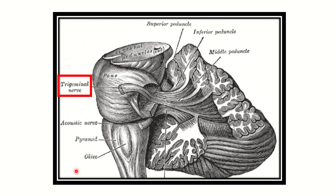Looking at the picture, we can see the pons and the cerebellum, and this area is the cerebellopontine junction. Here we can see a nerve arising — this is the trigeminal nerve, cranial nerve number 5. Below it, we can also see the acoustic nerve arising from this area, and this is the medulla oblongata with the pyramid and olive.